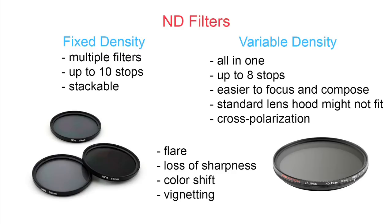If you are using a fixed density filter at high density — 10 stops, for example — you might run into the problem of difficulty focusing and even composing, because when you look through the viewfinder it's too dark. In this case you will need to take the filter off, focus, compose, and then put it back on. Variable density filters have an advantage here because you don't need to remove the filter. You can just turn it to lower density, focus and compose, and then turn it back to higher density.